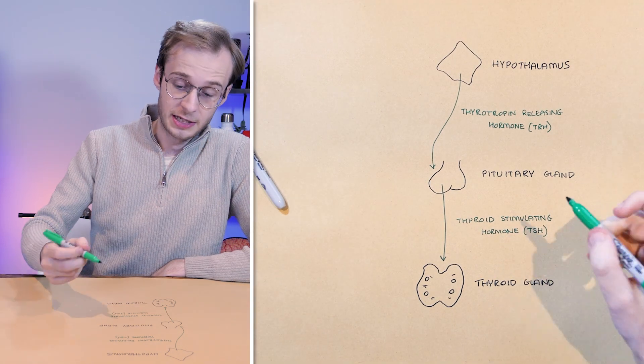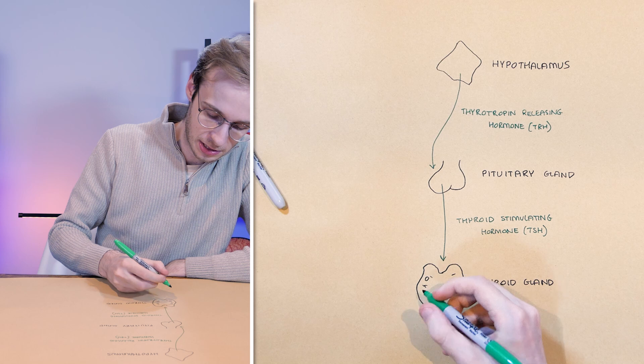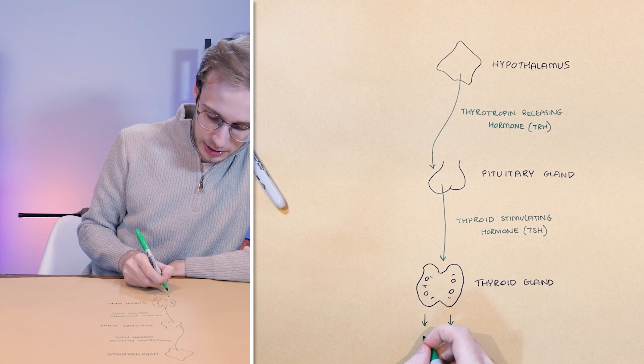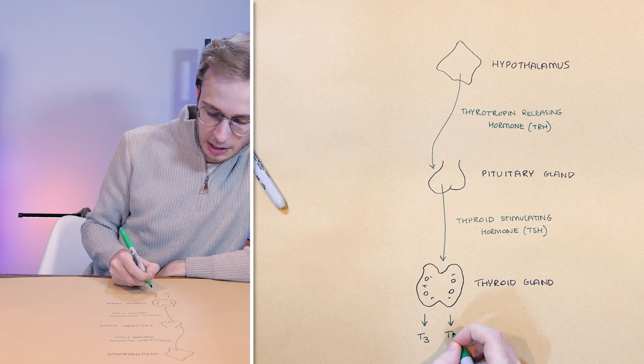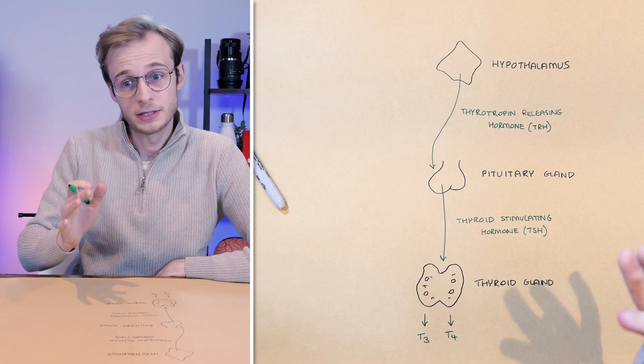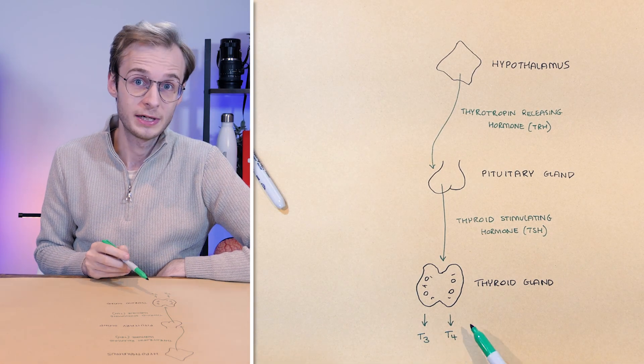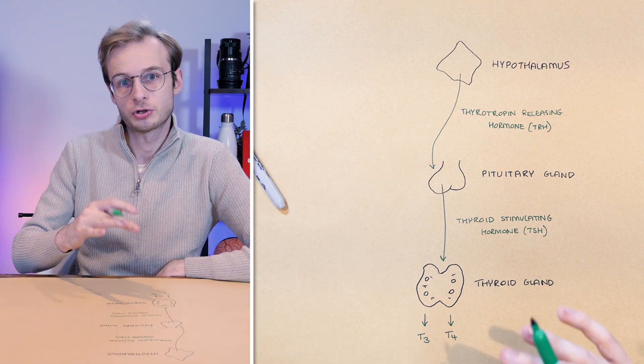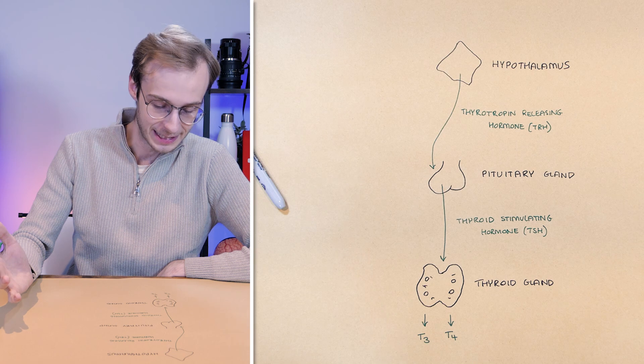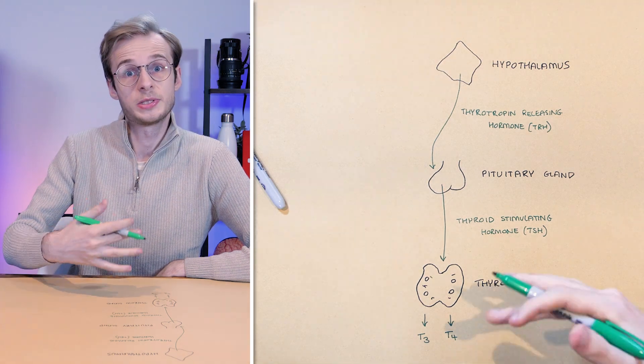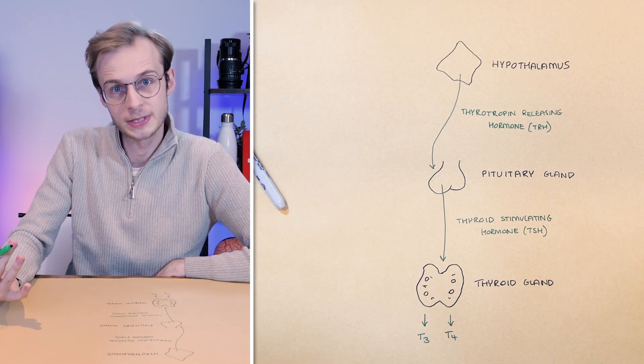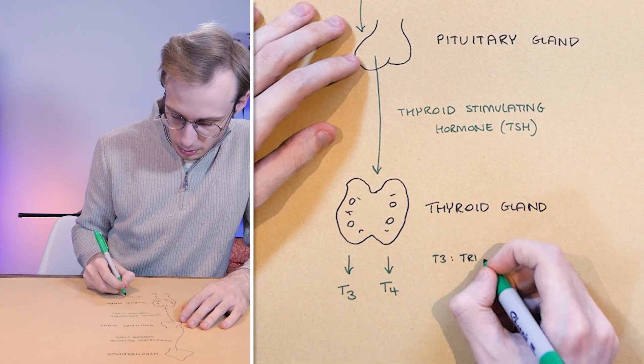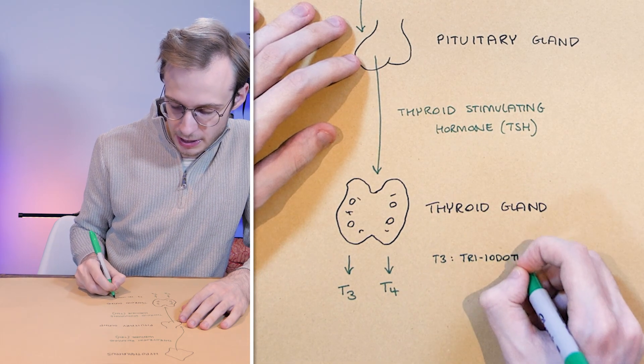And then finally, the action of TSH on the thyroid gland causes the release of two further hormones, which are T3 and T4. Now the key thing to be aware of here is that T4 is the pro-hormone of T3. T3 being triiodothyronine, it's got three iodines in it. And T4, its pro-hormone we call thyroxine.